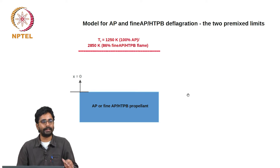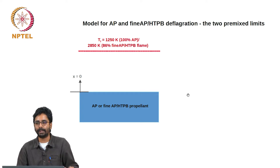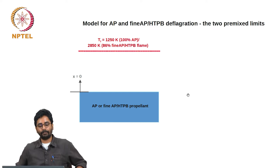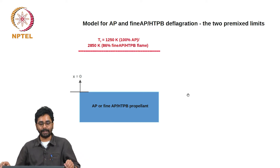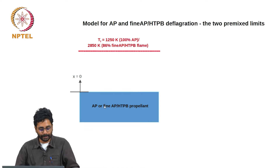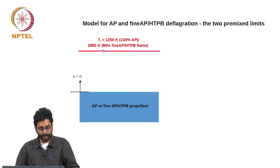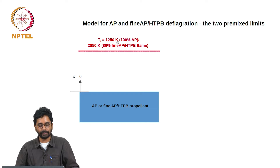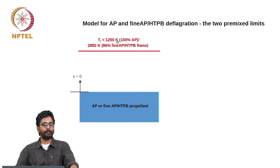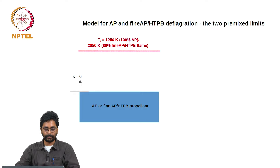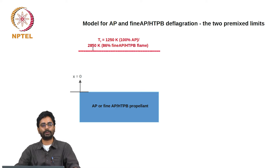In the limits of monopropellant AP and homogeneous propellant, the burning behavior is controlled by a one-dimensional premixed flame, and it can be represented like this. Either you have a block of AP or fine AP-HDPB propellant and there is a one-dimensional flat flame over that surface. The flame temperature is either corresponding to the AP monopropellant temperature which is 1250 Kelvins, or corresponding to the fine AP or the homogeneous propellant containing 86 percent AP which will be about 2850 Kelvins.